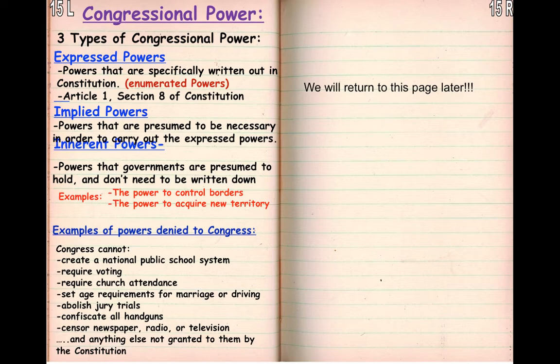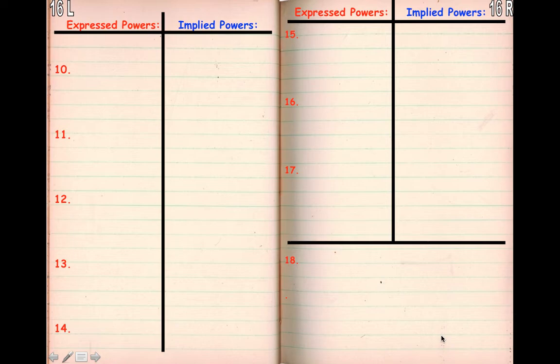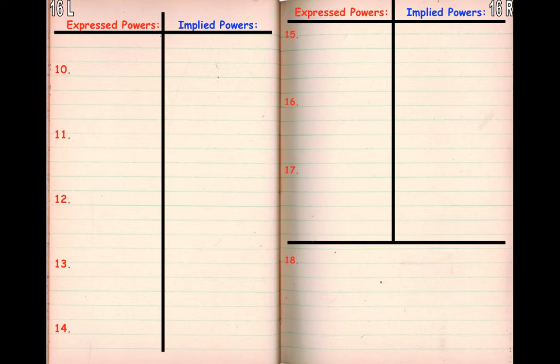So we're going to flip the page to 16L and 16R and create these two T-charts. One side, the left-hand side, is going to have the expressed powers — the ones explicitly written in the Constitution — and the other side is going to have the implied powers. You're going to do the same for 17L. So this should say 16, this should say 17.